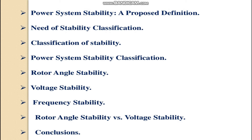Stability means: assume the system is initially running in a steady state condition. If the system deviates from its stable condition due to sudden variations of load or any other problem, and if the system is able to return to its initial stable condition after some delay, then the system is said to be stable. Stability is mainly classified into voltage stability, dynamic stability, frequency stability, and rotor angle stability.